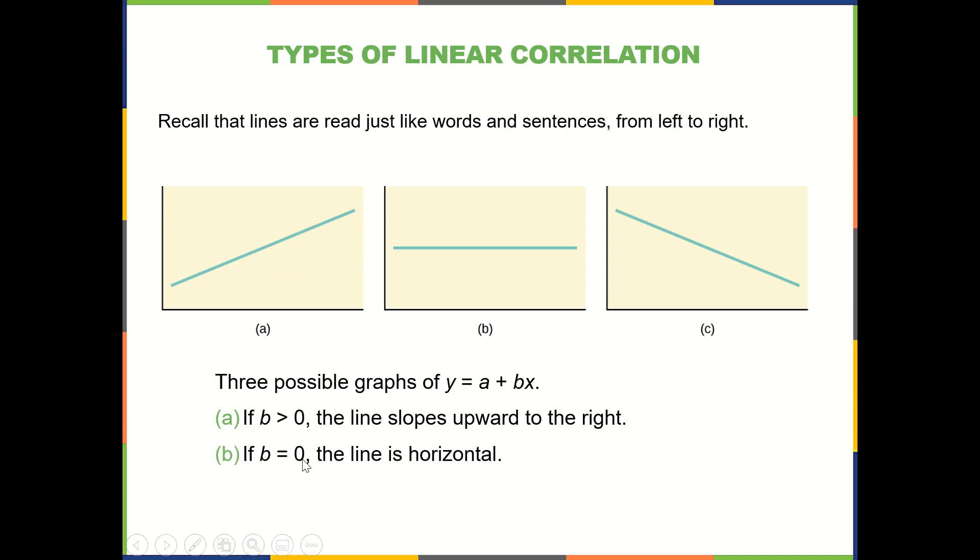And if b is equal to 0, your slope is 0. You don't have any slope. It's just constant. It's just flat. Then we say it's horizontal. And if your slope is negative, or less than 0, the line slopes downward. It's decreasing.